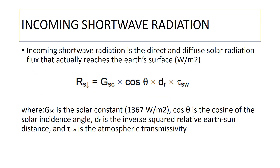Incoming shortwave radiation is the direct and diffuse solar radiation flux that actually reaches Earth's surface, computed in watts per square meter using this formula: solar constant (1367 W/m²) multiplied by the cosine of the solar incident angle, the inverse squared relative Earth-Sun distance, and atmospheric transmissivity — all computed in the previous steps. The first part of the pipeline is therefore the most important, as it feeds directly into computing incoming shortwave radiation.